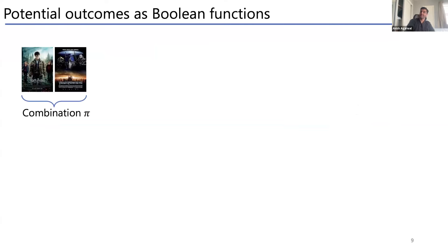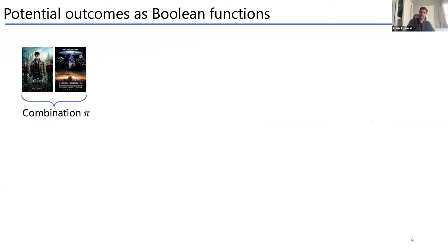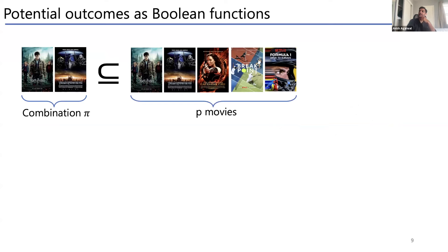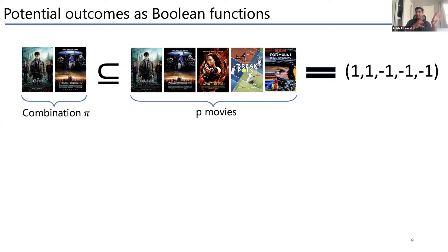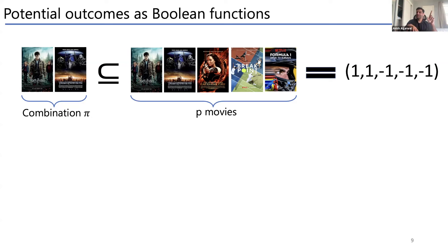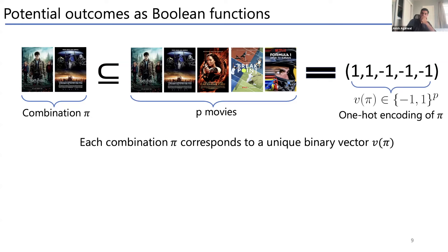Given a combination π — say Harry Potter and Transformers out of five movies — we can represent it as a boolean vector: entries are +1 if a movie is in the combination, −1 if not. So {Harry Potter, Transformers} becomes [1, 1, −1, −1, −1]. Every combination corresponds to a unique binary vector — there's a one-to-one mapping.